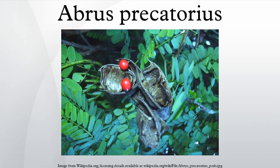Ecology and Invasiveness: Abrus precatorius is a severely invasive plant in warm temperate to tropical regions, so much so that it has become effectively pantropical in distribution. It had been widely introduced by humans, and the brightly colored and hard-shelled seeds had been spread by birds. By the end of the 20th century, it had been proclaimed as an invasive weed in many regions including Belize, Caribbean Islands, Hawaii, Polynesia and parts of the mainland United States.